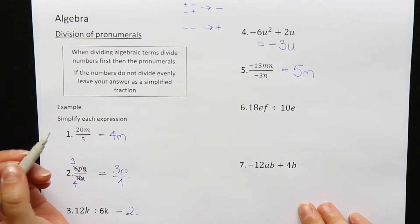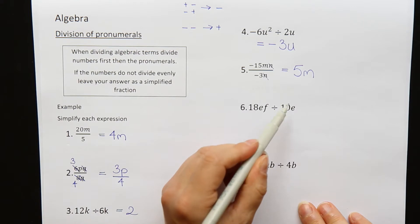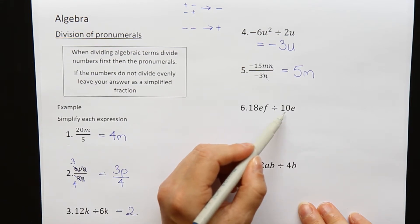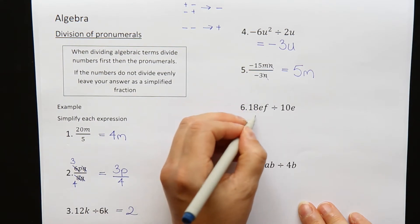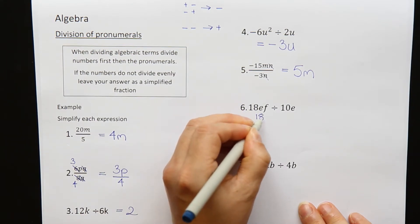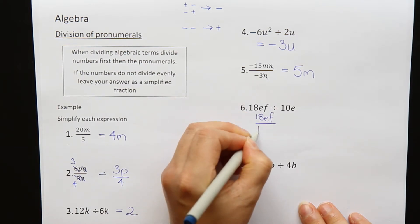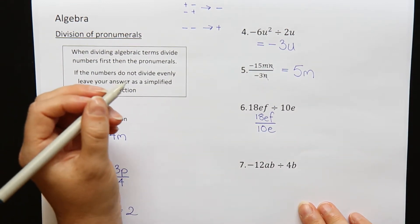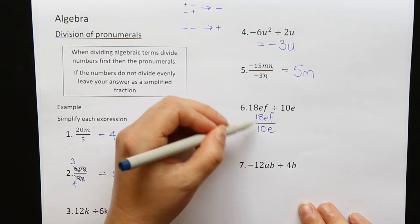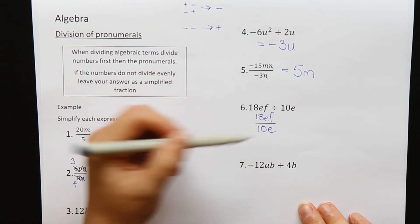Question six. 18ef divided by 10e. Well, we want 18 divided by 10. But that gives me a decimal. So when that happens, the best thing to do is to rewrite your question as a fraction. Because a divide and a fraction are the same thing. And that way, instead of having to go to a decimal, you can simplify your question into nice numbers here.